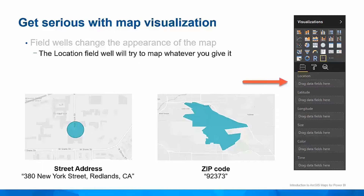In the example on the left, I added a street address field to the Location field well and I got a point location on my map. On the right, I added a field with zip code location to the Location field well, and you can see it added a polygon. The Location field well knows the difference between the two and shows the correct shape on the map.